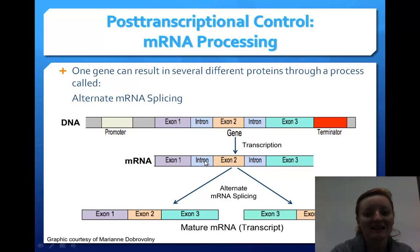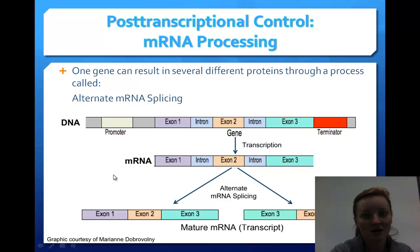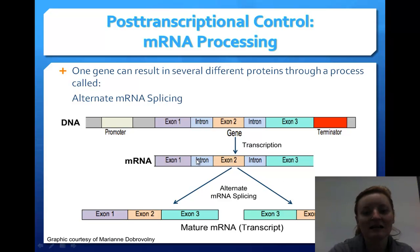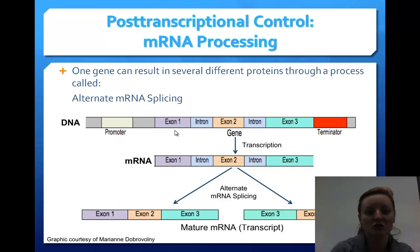You have introns and exons. Notice what ends up in the mature mRNA — only the exons. The exons are what get moved out of the nucleus; the introns stay in the nucleus. A way to remember: exons exit the nucleus. So we can change this even after transcription to figure out what genes we're going to express.